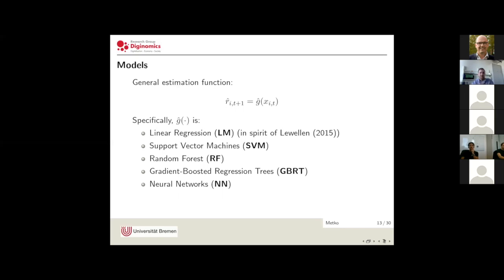In our empirical study, the function g can take various forms such as the linear approach, which we use for benchmarking purposes, then support vector machines, random forest, gradient boosted trees, and neural networks — where the bold letters in parentheses indicate the labels I will use later on the slides. One thing worth noting is that the linear model is obviously only able to capture linear effects and dependencies, while the four other models are all able to capture high-degree non-linearity, which is one main benefit of machine learning algorithms — they can fit any function.